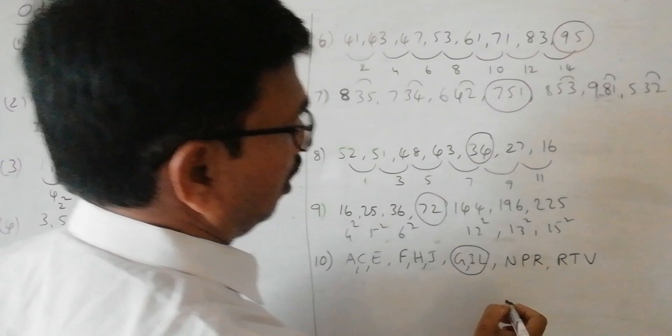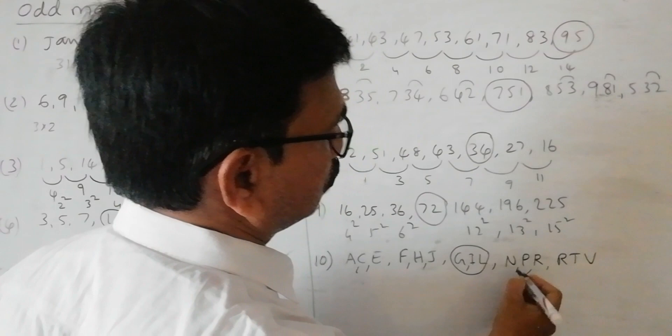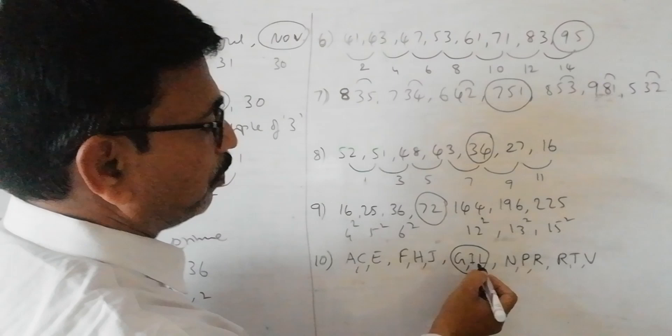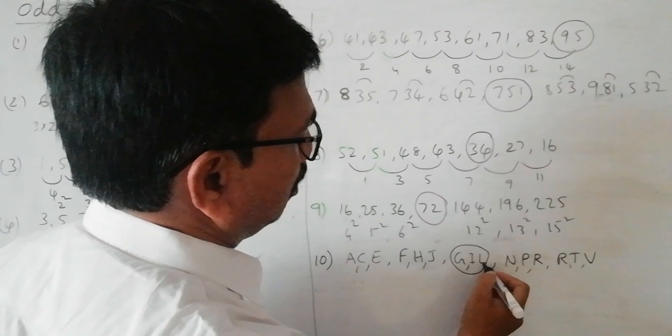And moving on to the remaining, N, O, P, Q, R. So in between one letter is missing. R, S, T, U, V. So in this particular term, we have, it should be G, I and then K. But here we have L. So this is the odd one out.